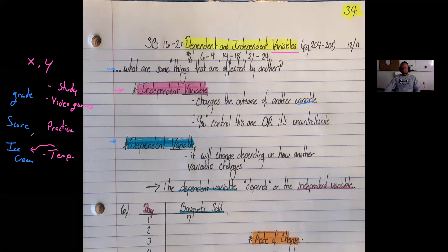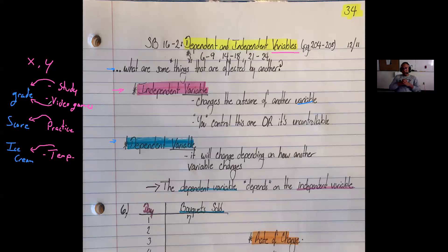Consider practice and a team's score—the more a team practices, the better their performance. The more somebody studies, that influences their grade positively. The more video games somebody plays, that influences their grade negatively. The independent variable is what comes first—it is the variable you control, like how much you study or how much your team practices. Or it can be uncontrollable by nature, like the temperature or the passage of time, which will have consequences like affecting somebody's age or how tall you are.